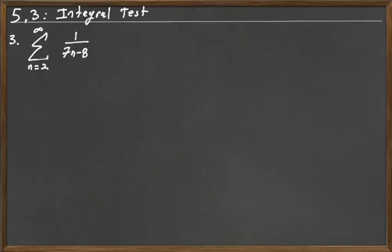In this video we're going to look at two more examples of applying the integral test to determine the convergence or divergence of an infinite series. For this particular series, we have the sum from n equals 2 to infinity of 1 over 7n minus 8.